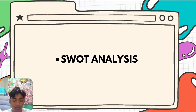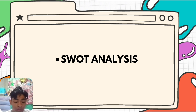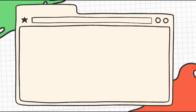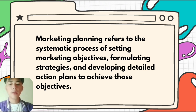Here is an example of the marketing analysis: the SWOT analysis. This analysis identifies a company's strengths, weaknesses, opportunities, and threats. It helps identify areas where the company has a competitive advantage, areas that need improvement, and external factors that could impact the business. It involves analyzing market conditions, identifying target audiences, conducting market research, and evaluating internal and external factors that may impact the success of marketing efforts.